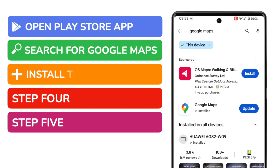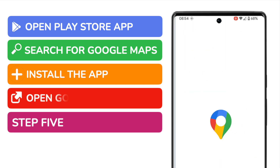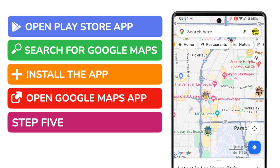I'll now choose to update the app by tapping on the blue button. The Play Store will quickly install the Maps app on your phone, and you'll see a new open button has now appeared next to the Google Maps option. Let's tap on that once to open the app, and you'll see that the Maps app is then shown.